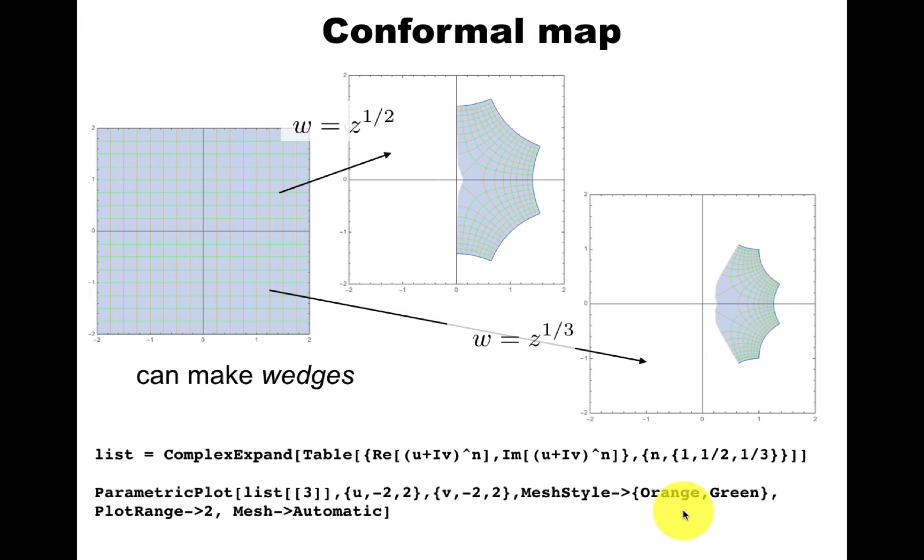If you've heard of conformal maps, you've probably seen examples like these. The square root map will sort of twist a nice, smooth grid like this into this twisted grid. And the same with the third root map. It also twists it, but even more, so to speak.